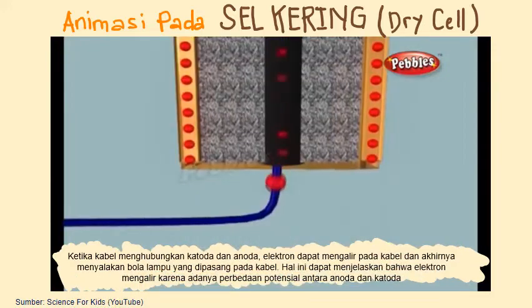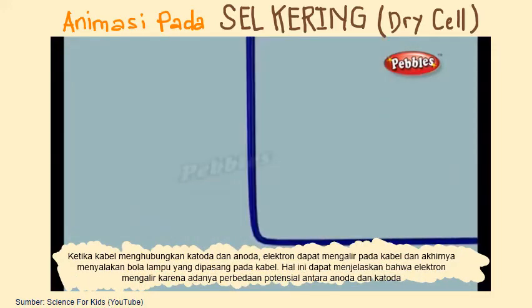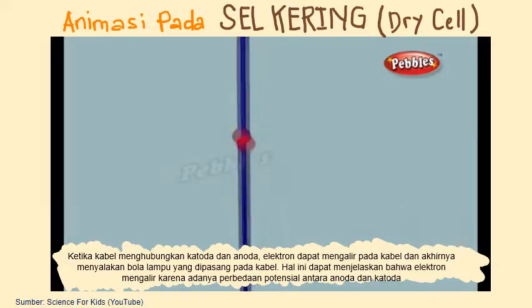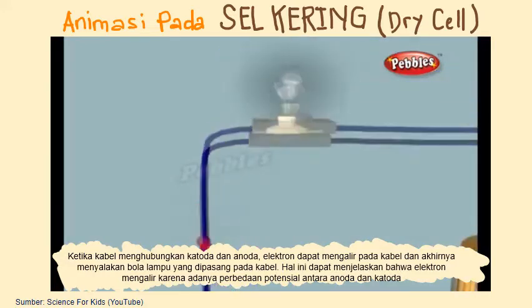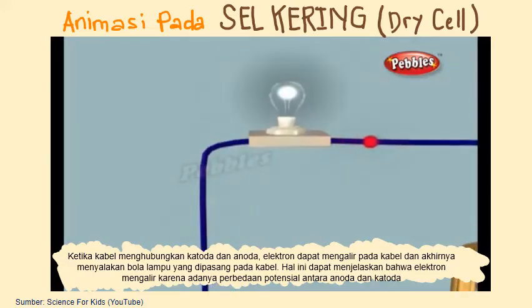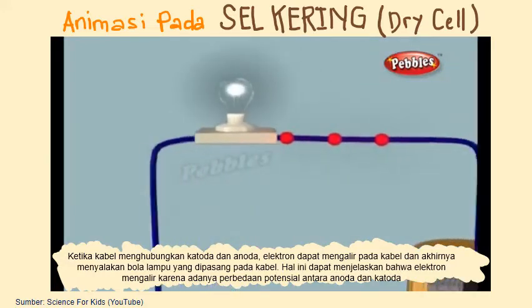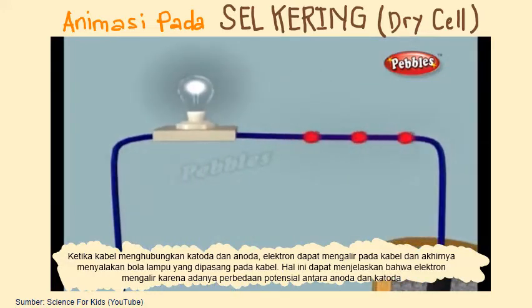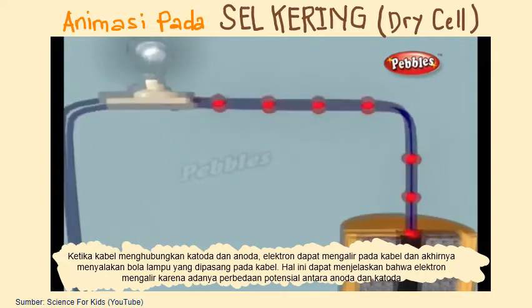When a wire connects the cathode and the anode, the electrons will be able to get to the cathode, lighting the light bulb along the way. This is one way of describing how electrical potential causes electrons to flow through the circuit.